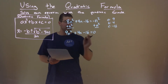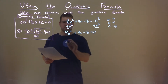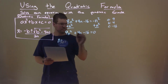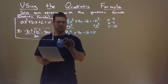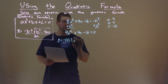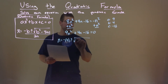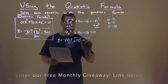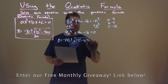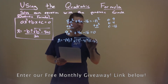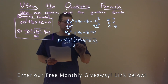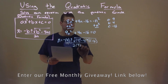Now we're going to use that information and plug it into the quadratic formula. So, negative b — negative 4 — plus or minus the square root of 4 squared minus 4 times a, which is 9, times c, which is negative 16, all over 2 times a, which is 9.